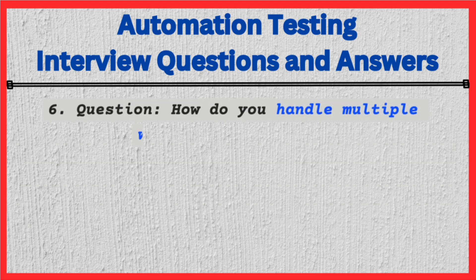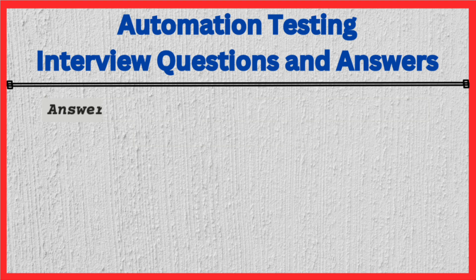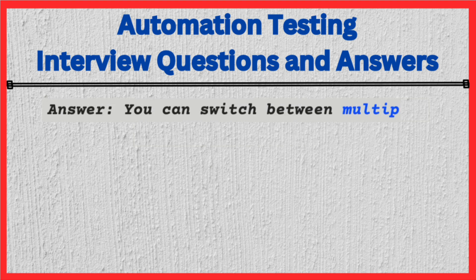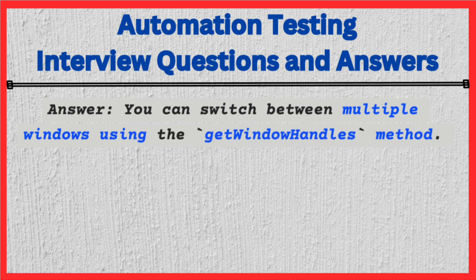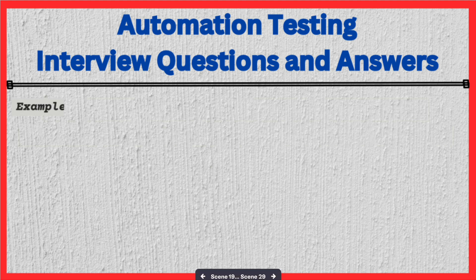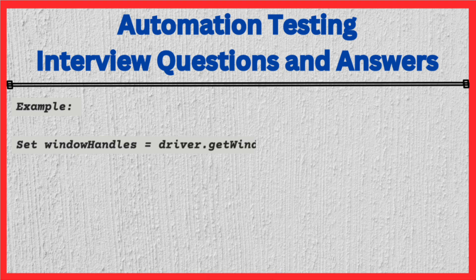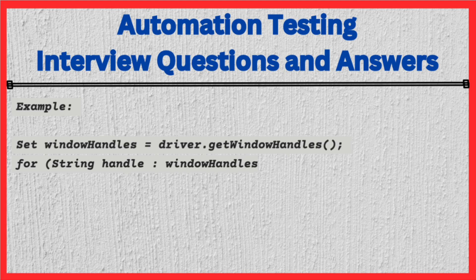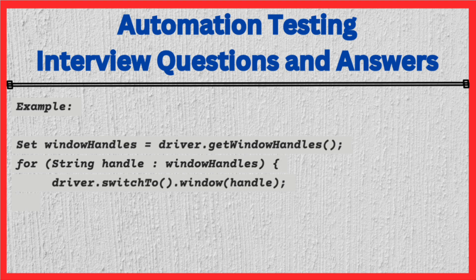Question: How do you handle multiple windows in Selenium? Answer: You can switch between multiple windows using the getWindowHandles() method. Example: Set<String> windowHandles = driver.getWindowHandles(); for (String handle : windowHandles) { driver.switchTo().window(handle); // perform actions on the current window }